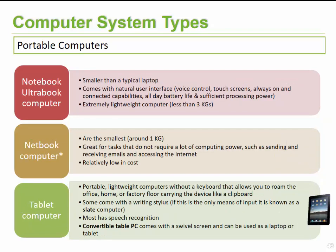Notebooks and ultrabooks are smaller than your laptop. They come with a natural user interface, which we'll talk about later. They typically include embedded assistance such as voice controls, touch screen capabilities, are always connected to a network, allow you to work all day, and have enough processing capabilities. These are also extremely lightweight. Typically for a laptop you would get screens from 10 inches onwards, whereas with notebook and ultrabook computers these would be smaller screen sizes such as 7 inches and smaller.